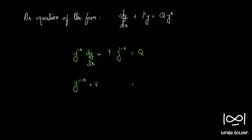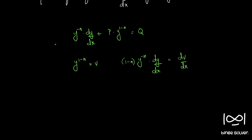Differentiating v = y^(1−n) with respect to x, we get dv/dx = (1−n)·y^(−n)·dy/dx. So y^(−n)·dy/dx = (1/(1−n))·dv/dx. Substituting back, the equation becomes (1/(1−n))·dv/dx plus P·v = Q.